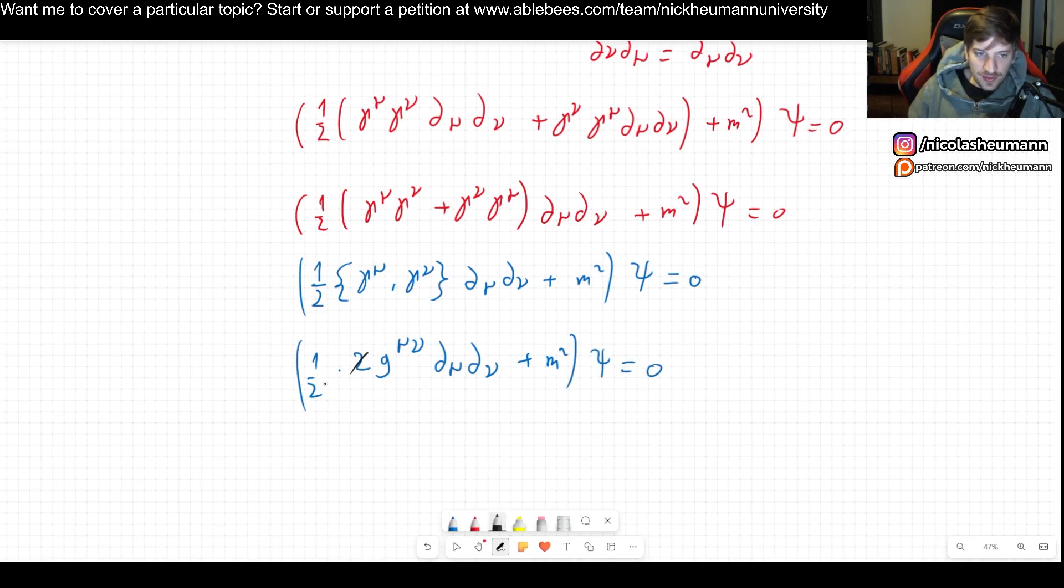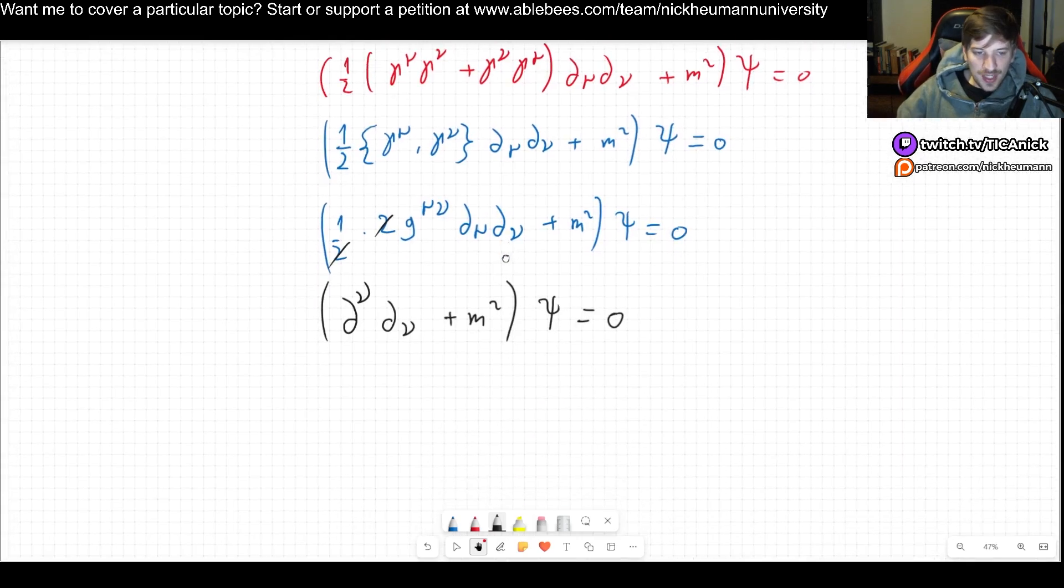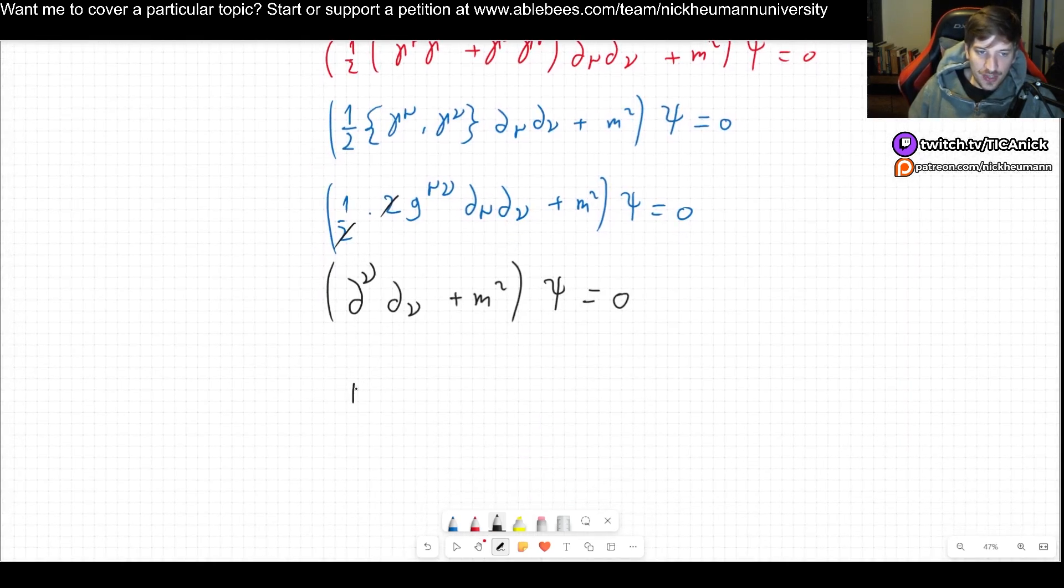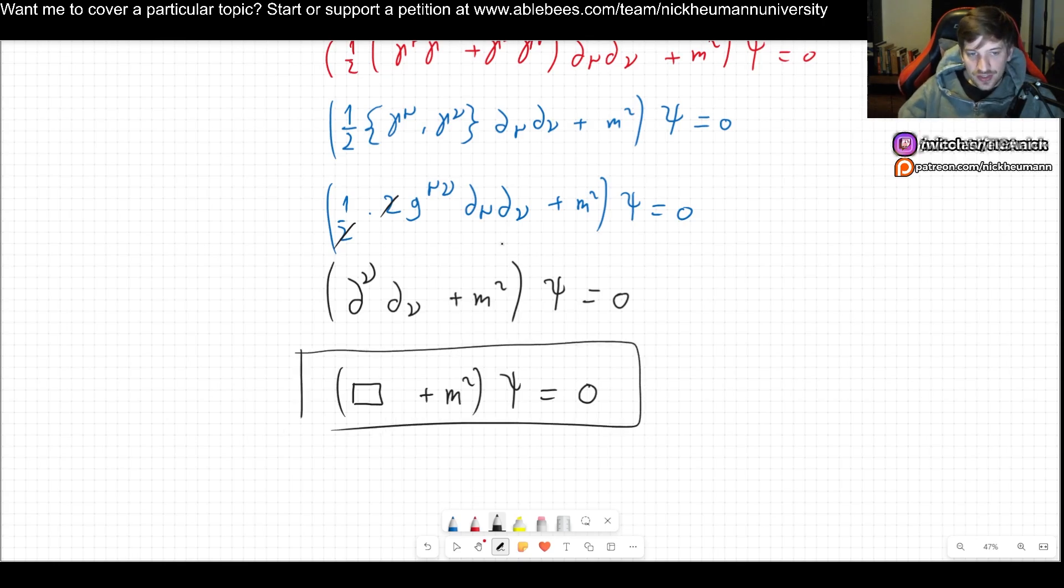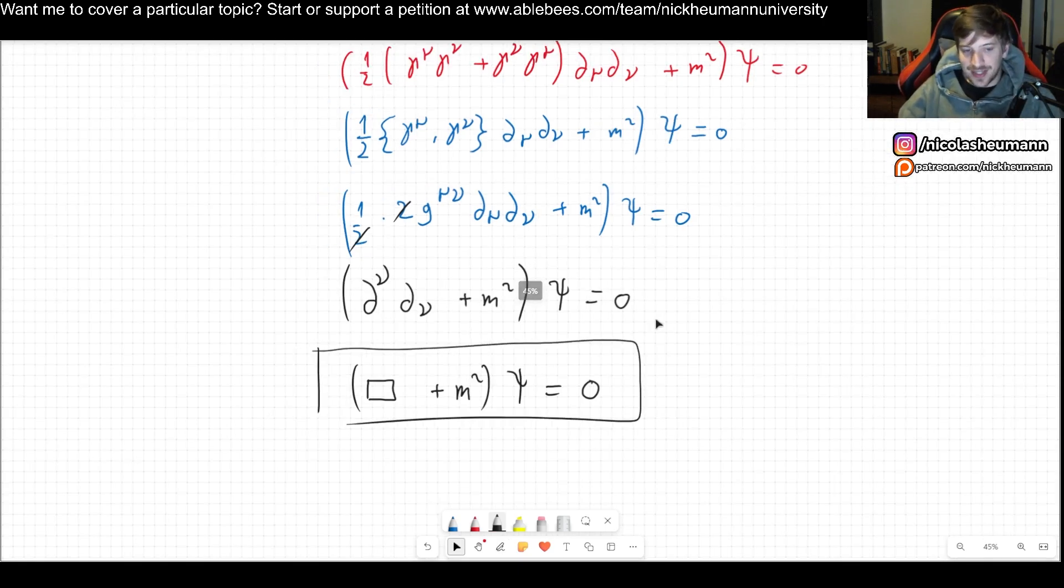And now finally, well of course these two cancel out and g mu nu upstairs times the mu here, that's simply going to give us del nu del nu plus m squared acting on psi. And this is of course equal to zero. And what we have here is simply the Klein-Gordon, right? This operator here is going to be the D'Alambertian plus m squared psi. So we can see that the Dirac equation does indeed imply the Klein-Gordon equation.